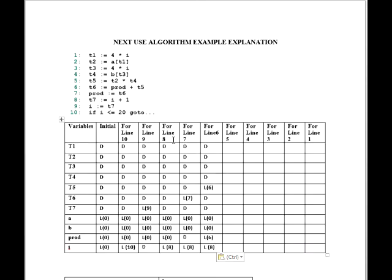For line number 5: T2 and T4 are live. T5 is dead, so we put D on T5. The rest of the values will be the same as line number 6 — just copy and paste.